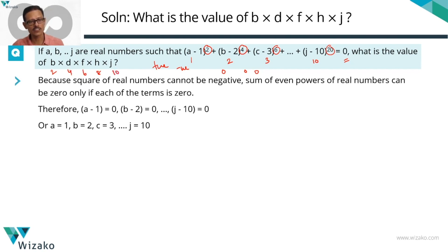So the product of b, d, f, h, j is nothing but the product of 2 × 4 × 6 × 8 × 10.